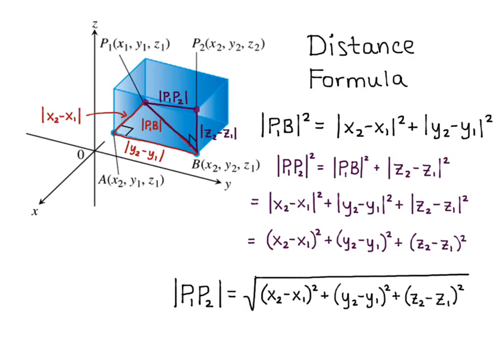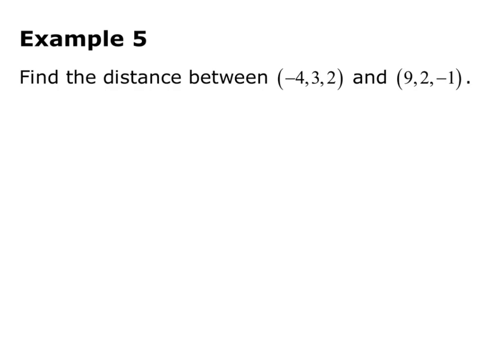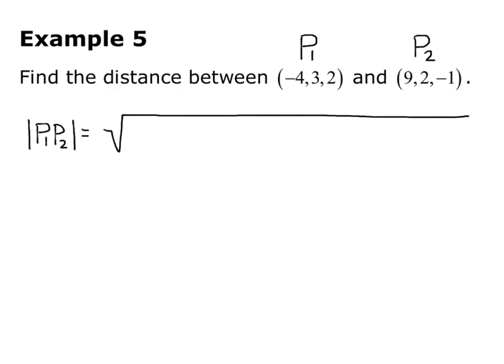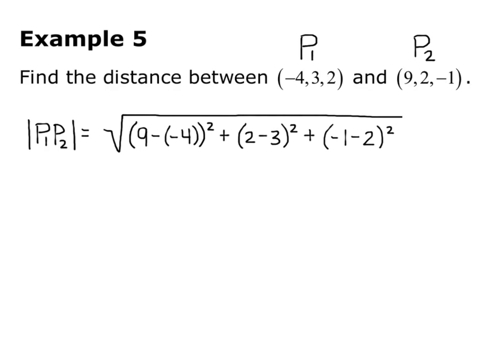This is almost the same as in two dimensions, but we've added a Z component. Let's practice with this. For example 5 from the guided notes, we want to find the distance between the points (−4, 3, 2) and (9, 2, −1). Labeling these P1 = (−4, 3, 2) and P2 = (9, 2, −1), we plug into the formula: |P1P2| = √[(9 − (−4))² + (2 − 3)² + (−1 − 2)²].